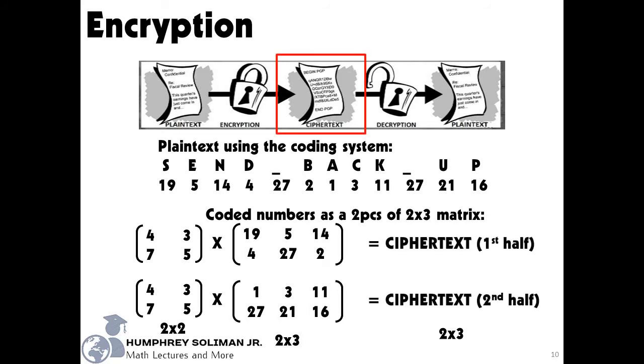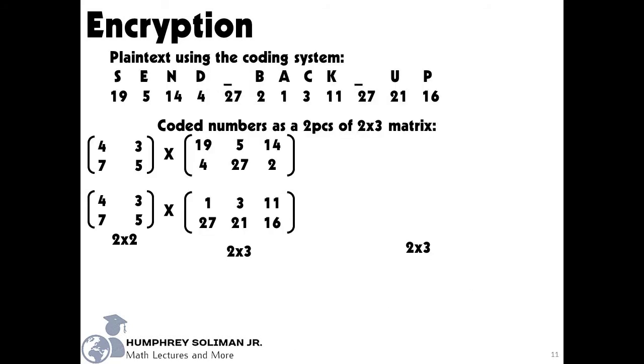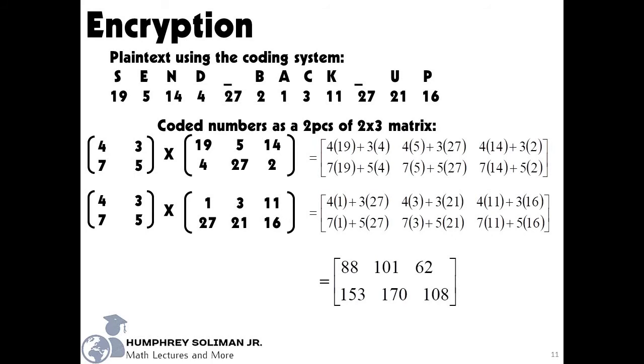These resulting matrices will be our cipher texts. We have the 1st half and the 2nd half of the cipher texts. In multiplication, we will get these matrices as the results. These cipher text will be sent to another student in the activity. Don't forget to include the key matrix we used in the encryption.